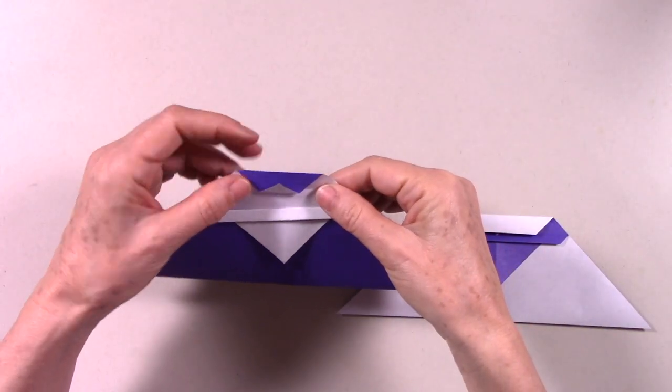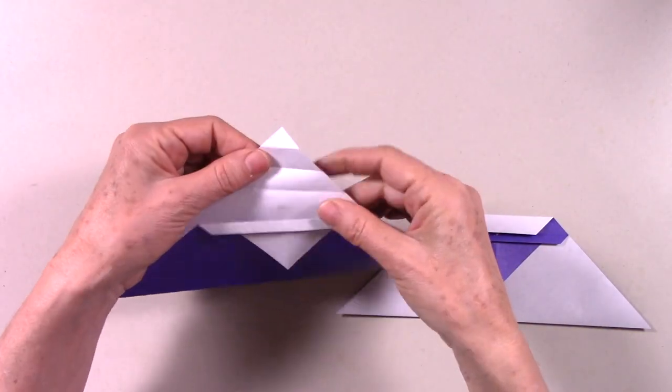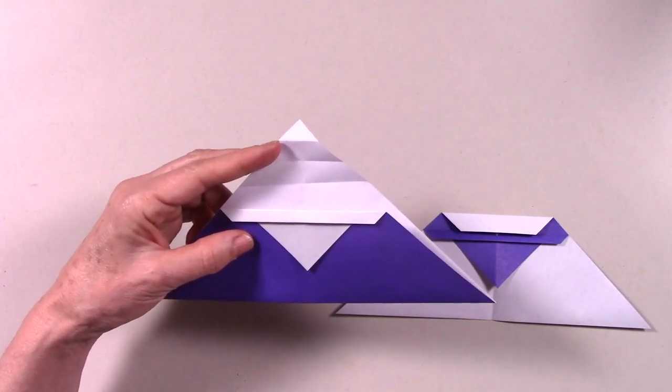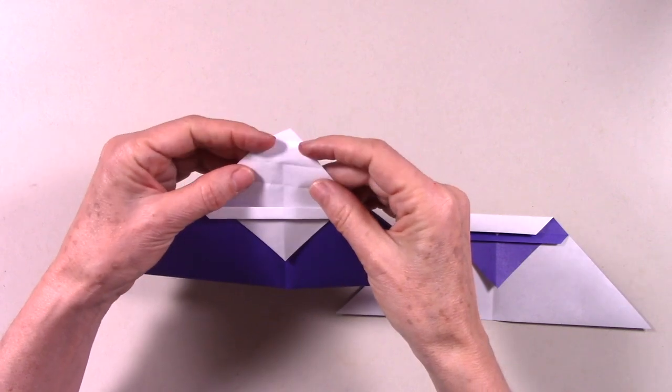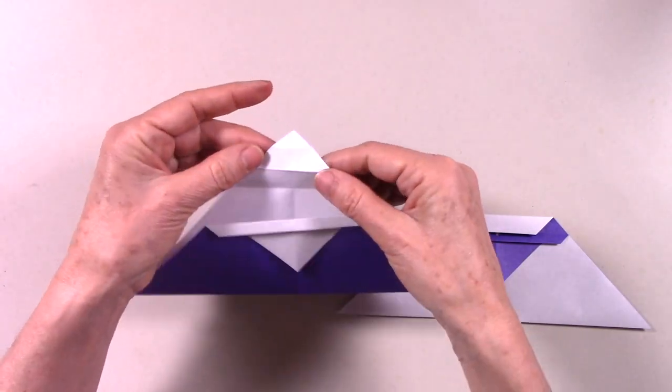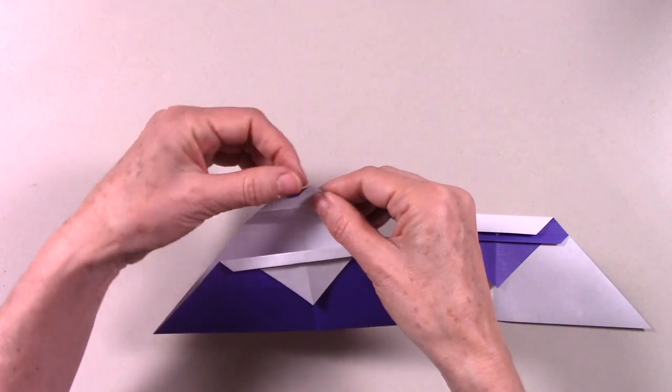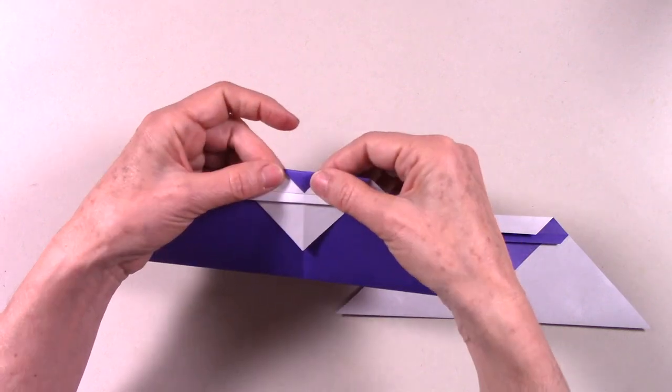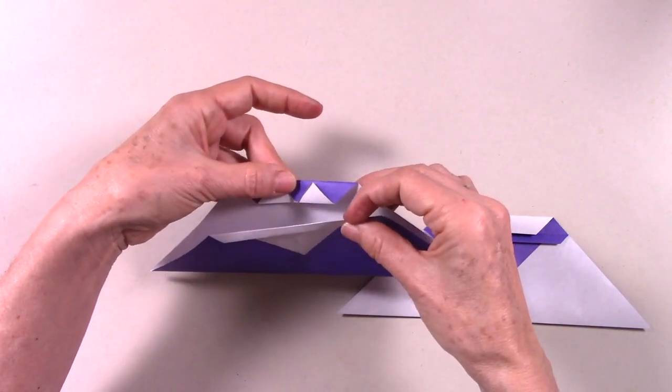We unfold and we are going to reverse some of those folds. The first one will remain the same, valley fold on the white side. The middle one becomes a mountain fold. And the top one, the shorter one, becomes a valley fold. And we rearrange so that we create the crown.